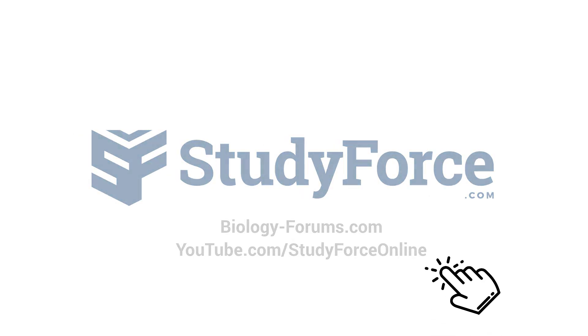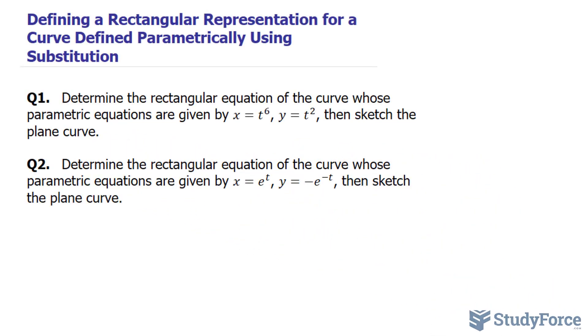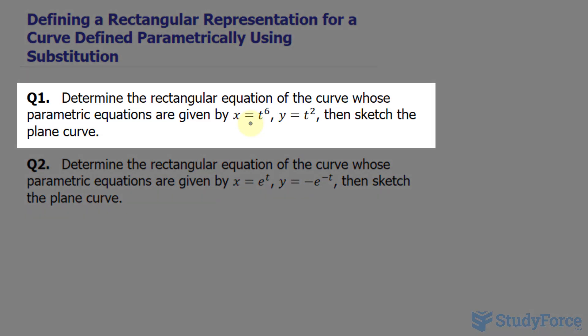Pretend that we had two parametric equations and we wanted to combine them so that they're represented as one equation that is in rectangular form. Take for example in question number one we have these two equations and they're both in terms of t.